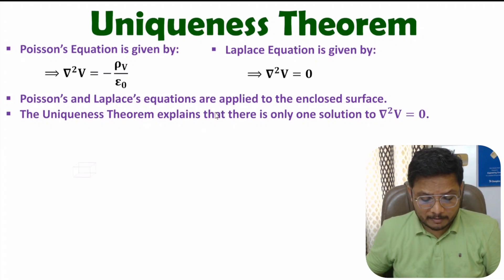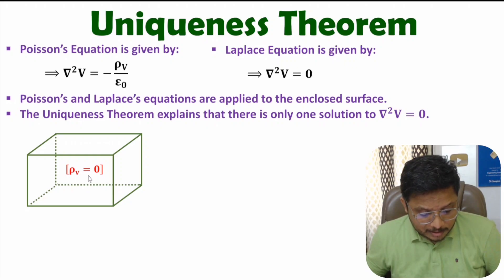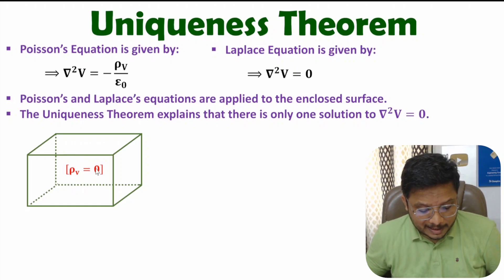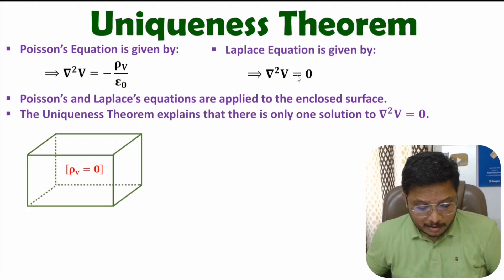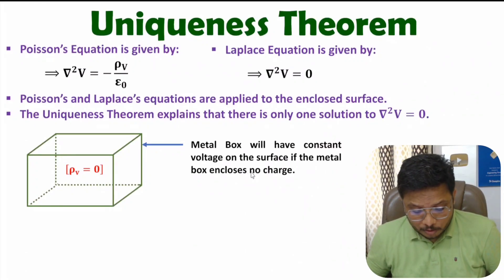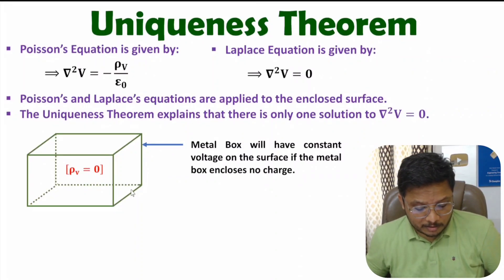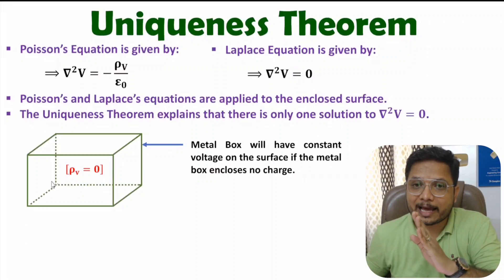Let me explain this with a practical case study. Consider a metal box that has no volume charge inside. Since there is no volume charge, we apply Laplace equation: del squared V equals zero. As per Laplace equation, this metal box will have a constant voltage on its surface and inside — there will be no maxima or minima.